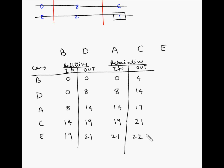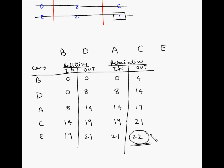So basically in 22 hours all the cars will be processed in both the refitting and repainting shops. Gary can process these cars in less than or equal to 24 hours, and he can gain the contract if he schedules these jobs based on the sequence B, D, A, C, E.